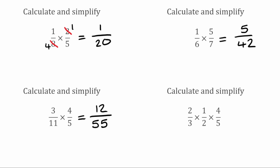For our next question, we've got 2 over 3 multiplied by 1 over 2 multiplied by 4 over 5. We're going to see if we can cross-cancel any of these numbers, checking if any of the numbers on top have a highest common factor with any of the numbers on the bottom that is greater than 1. Looking at the first two fractions, we've got 3 and 1 — highest common factor is 1, so we can't cancel them. However, we've now got 2 and 2, and the highest common factor of 2 and 2 is 2 itself. So we divide both of those 2s by 2, giving us 1 each. There's nothing else we can cancel, so we're just going to multiply these through. We multiply the 3 numerators together: 1 times 1 times 4 gives us 4. And for the denominators: 3 times 1 times 5 gives us 15. So our answer to that one would be 4 over 15.